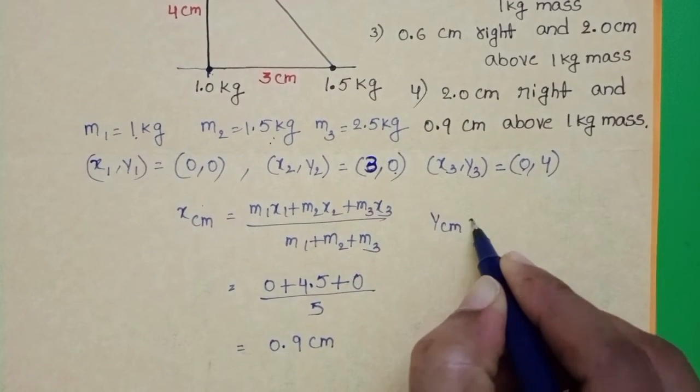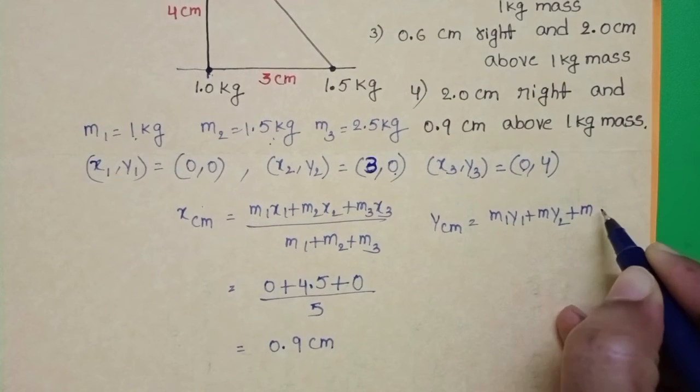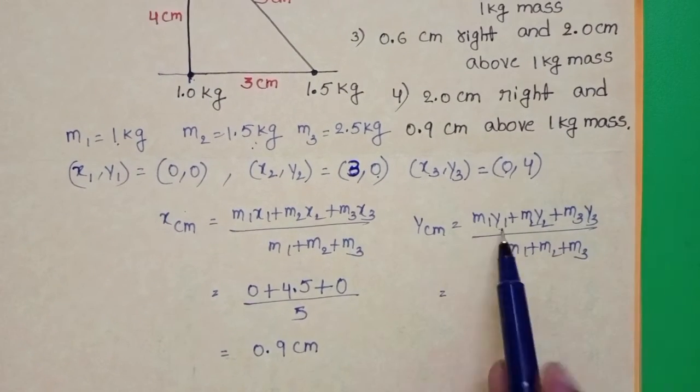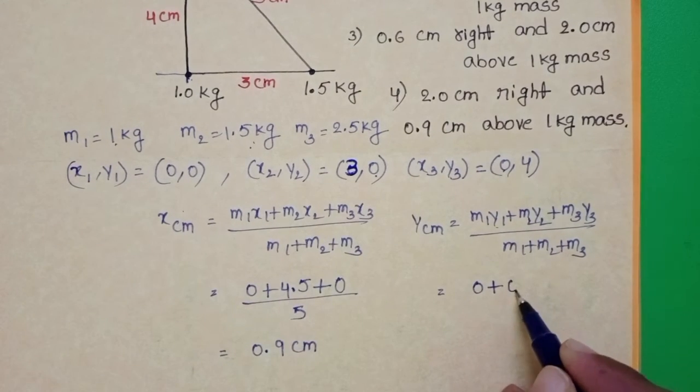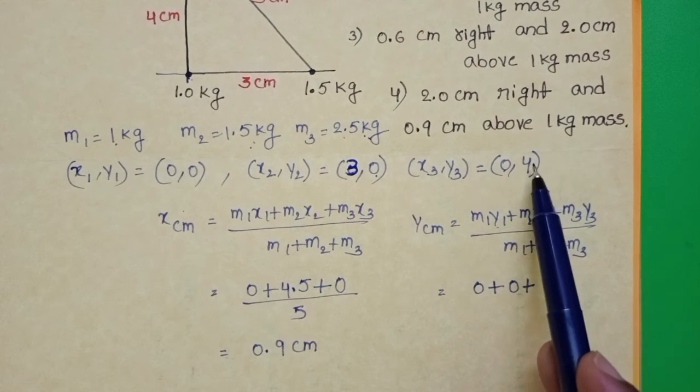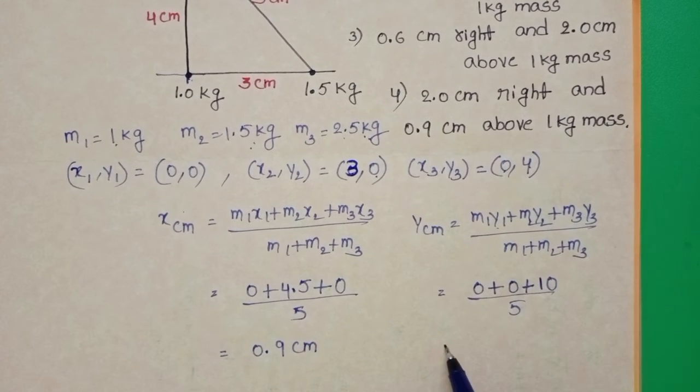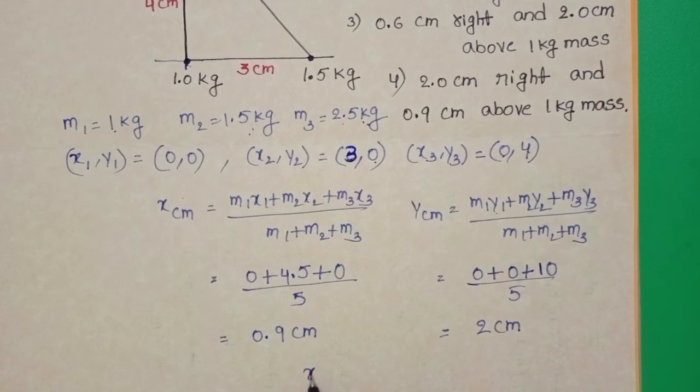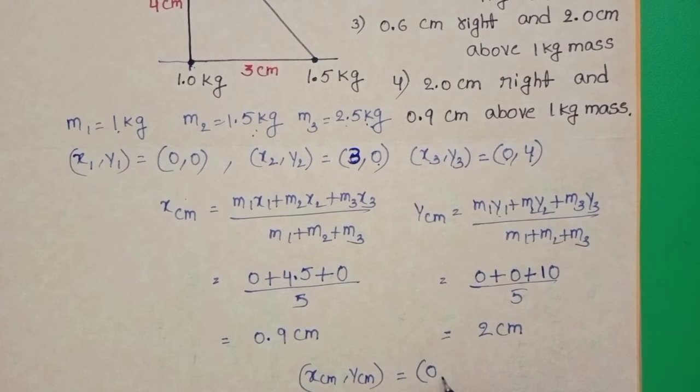y_cm equals m1·y1 + m2·y2 + m3·y3 divided by m1 + m2 + m3. 2.5 into 4 equals 10. 10 by 5, 10 by 5 equals 2 cm. The center of mass of the system is located at 0.9,